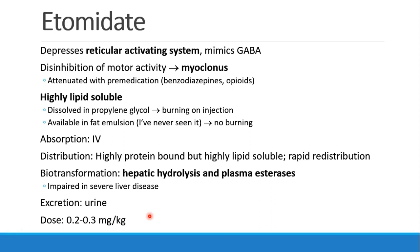Etomidate causes some disinhibition of motor activity, and so we routinely see myoclonus, which looks kind of like seizure activity when we give a bolus of etomidate. This can be attenuated if you premedicate with benzodiazepines or opioids first. Etomidate is very lipid-soluble and we normally receive it in a propylene glycol medium, which causes some pretty severe burning on injection. Some books mention etomidate available in a fat emulsion like propofol, but in that case there's no burning.